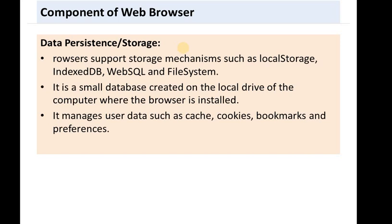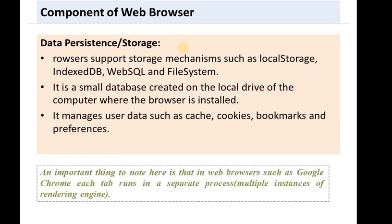You may have used the bookmark option. Whenever you bookmark a page, it is stored in your data persistence storage — it acts like a small cache memory where your old data is saved. An important thing to note is that in browsers like Google Chrome, whenever you open a new tab, it causes a separate process, meaning multiple instances of the rendering engine run when you are using multiple tabs.